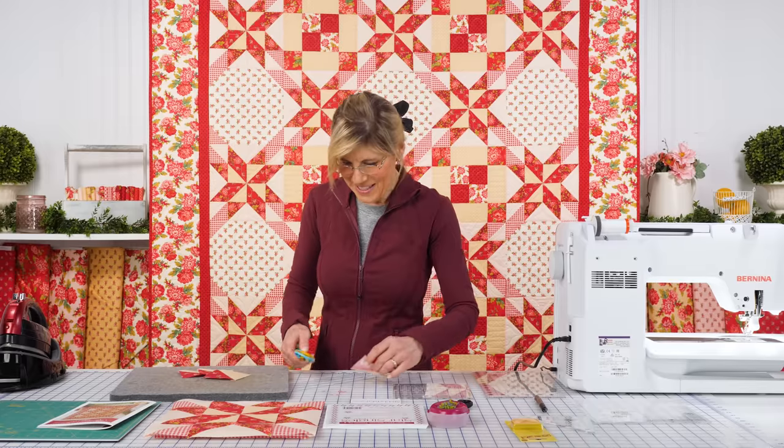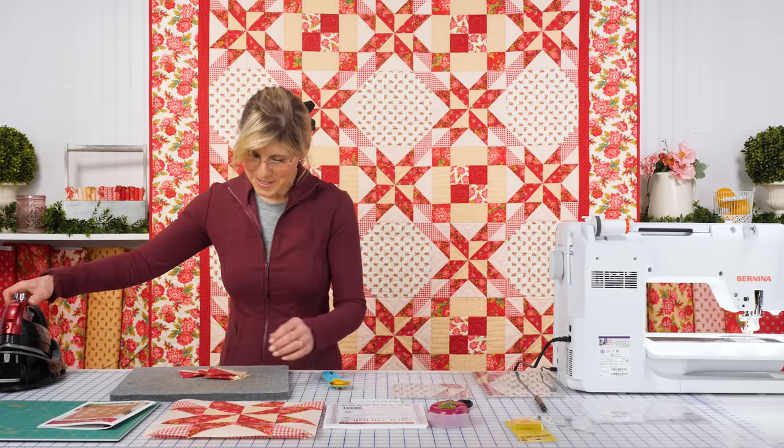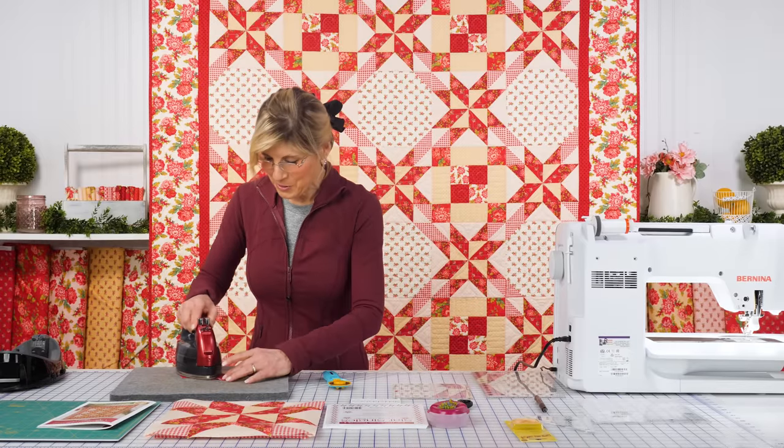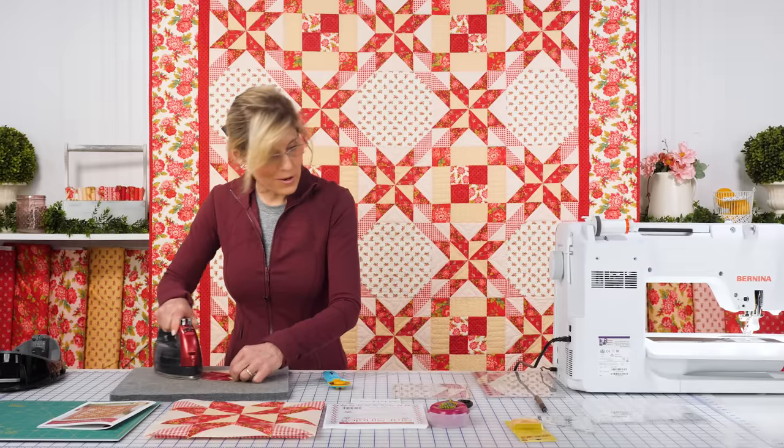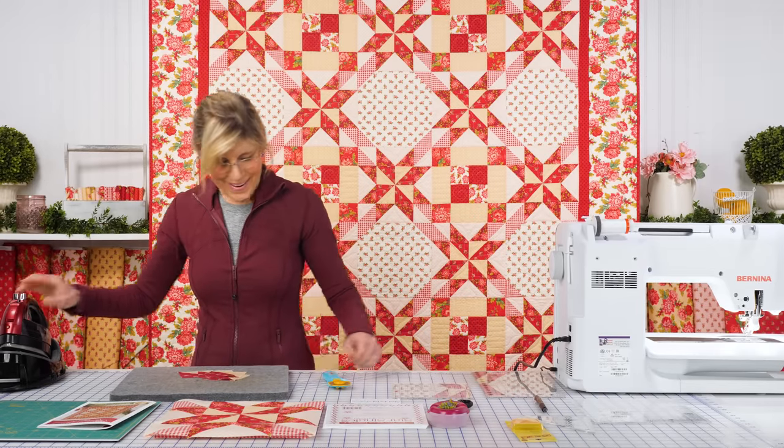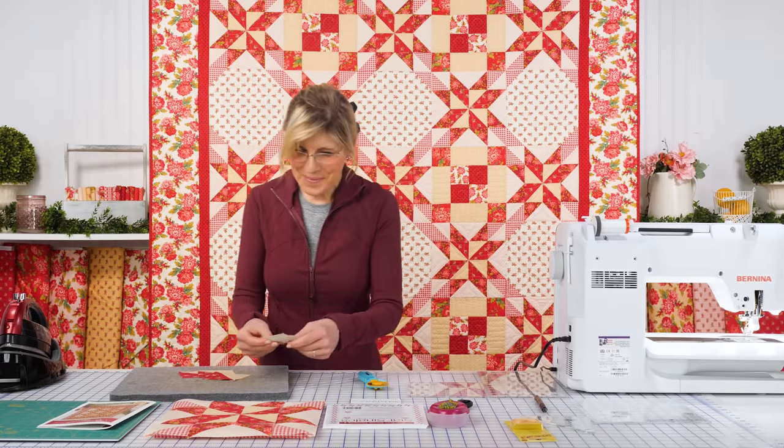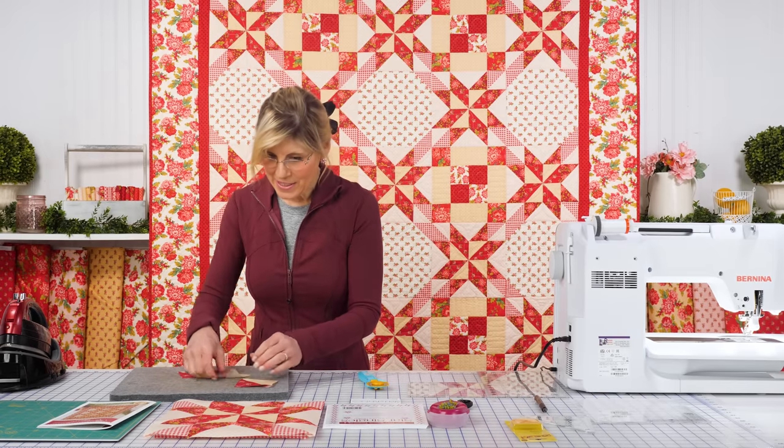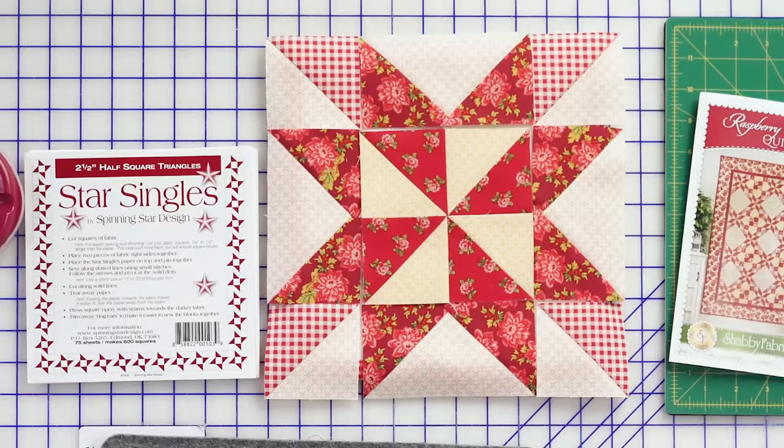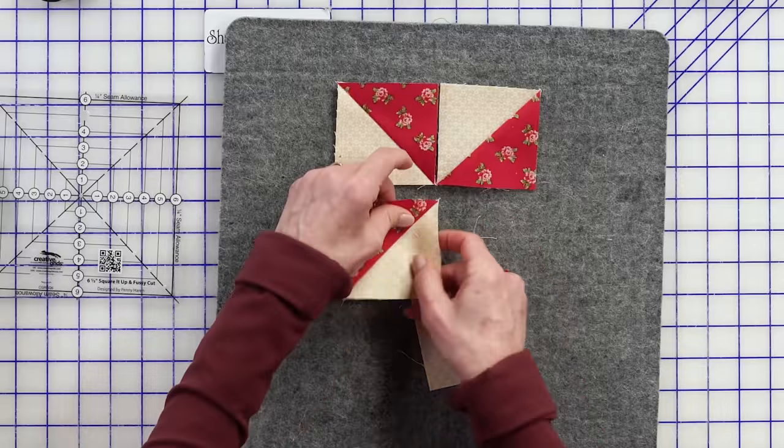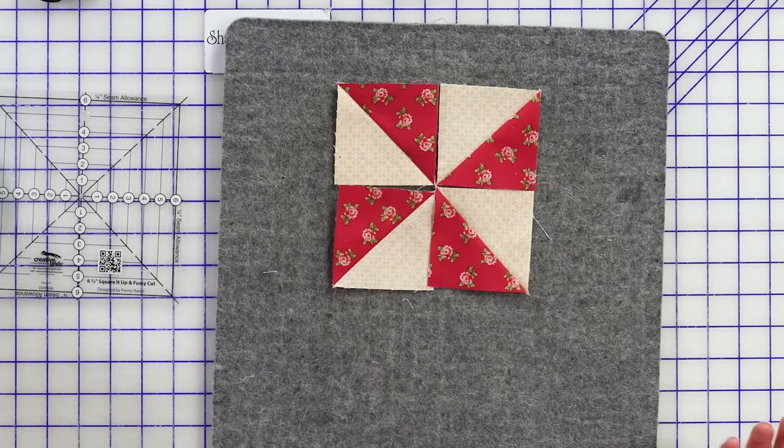One of the other things I encourage you to do is to lay out your pinwheel. I can't tell you how many times I have sewn a pinwheel together in the wrong orientation. And of course I'm grabbing for the seam ripper, which is never too far away from my sewing machine. So I like to lay everything out first. Let's just bring that over a little more front and center. I'm looking at my picture here of my pinwheel. You can see it's very easy to get this off. So go ahead and lay that out.